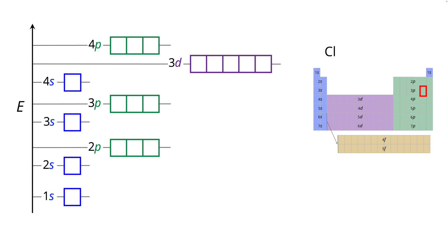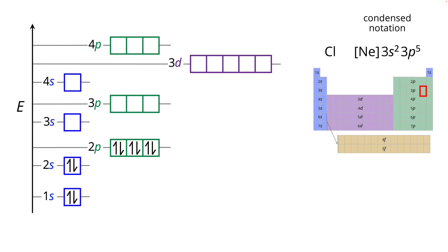Let's try chlorine next. Chlorine has an electron configuration 1s² 2s² 2p⁶ 3s² 3p⁵. With longer electron configurations it's simpler to use an abbreviated or condensed notation. Instead of writing out 1s² 2s² 2p⁶, we represent those inner shell or core electrons by the neon symbol in brackets. We'll do this with orbital diagrams as well, so 1s² 2s² 2p⁶ corresponds to neon and we use the condensed notation.